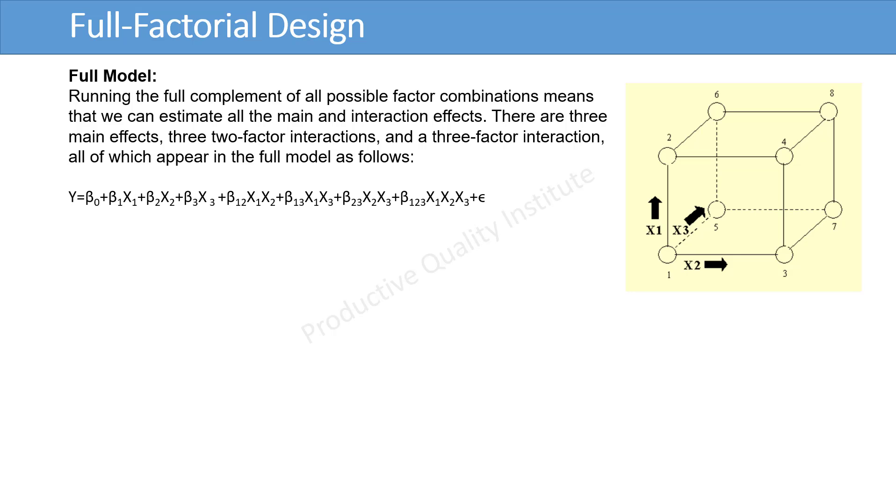Running the full complement of all possible factor combinations means that we can estimate all the main and interaction effects. There are 3 main effects and 3 two-factor interactions and 1 three-factor interaction, all of which appear in the full model as follows. Y equals beta 0 plus beta 1 times x1 plus beta 2 times x2 plus beta 3 times x3 plus beta 12 times x1 times x2 and so on. A full factorial design allows us to estimate all 8 beta coefficients from beta 0 to beta 123.